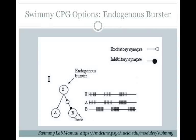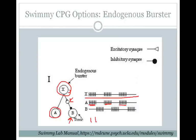One of the options for your SWIMME CPG is an endogenous burster. In the endogenous burster CPG, you have an endogenously bursting cell X — so even if you only recorded from X, you'd see this bursting on and off of activity. If you hook up X, an excitatory cell, with A, which is just a normal neuron, you can get A to fire at the same time that X does. If you then excite an inhibitory interneuron onto a tonically active cell B — if there were no inhibition B would always be firing — now you have inhibition when X is on, so there's no firing in B. When X turns off, then you get your firing in B. If A and B are your motor neurons, you can get your alternating rhythmic locomotor pattern.